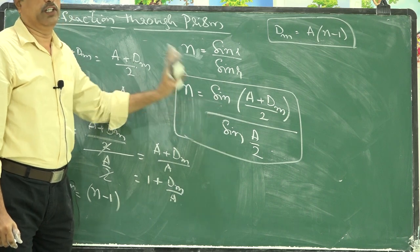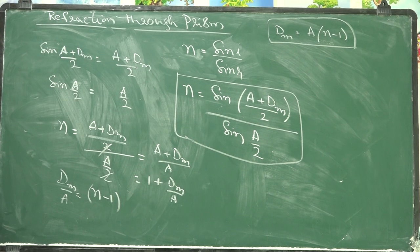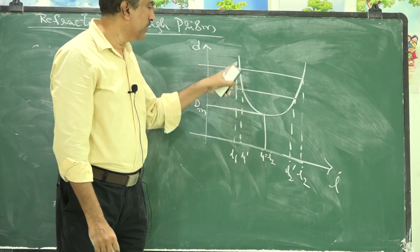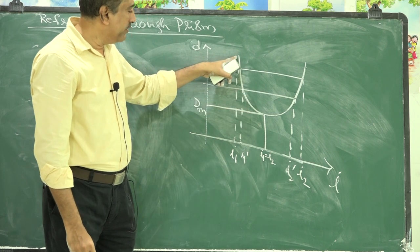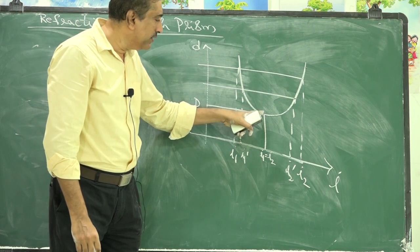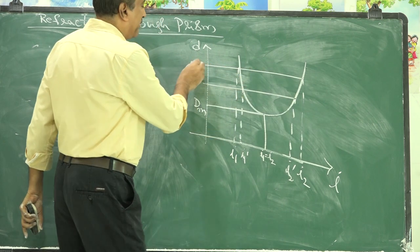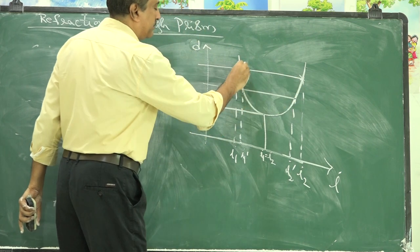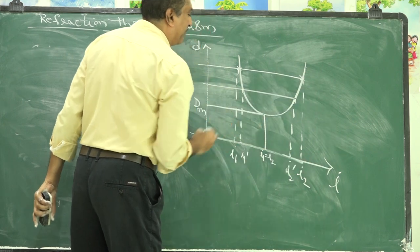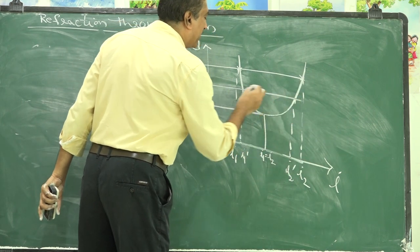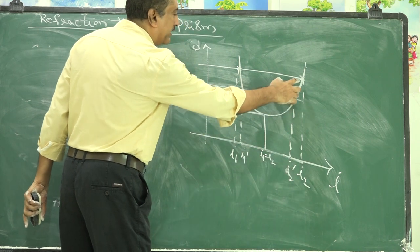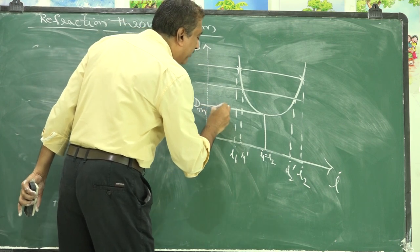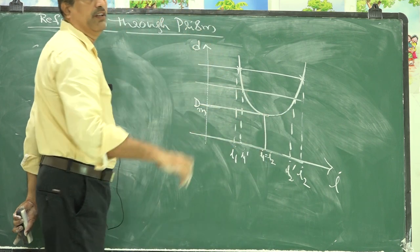For a small angle or thin prism, the angles are very small, so sin(θ) ≈ θ. Therefore, N = (A + Dm)/2 divided by A/2, giving N = (A + Dm)/A = 1 + Dm/A. Thus Dm = A(N - 1). This approximation is valid only for small-angle or thin prisms; for other cases, the full formula must be used. A graph of I versus D gives a curve where deviation decreases to a minimum and then increases, with minimum deviation corresponding to I1 = I2.